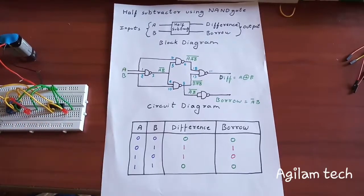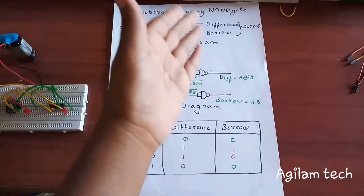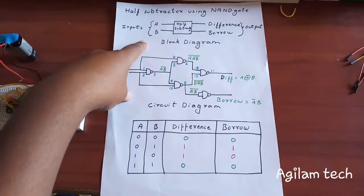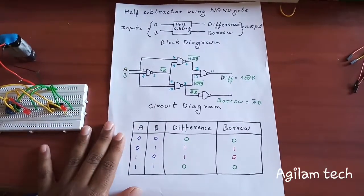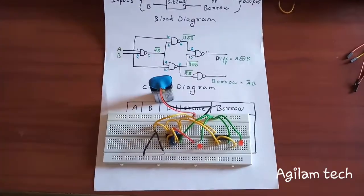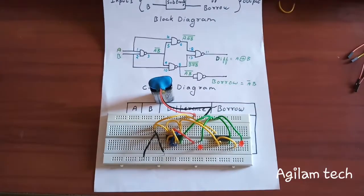Hey everyone, in this video we are going to see a half subtractor using NAND gate. This is the block diagram, and this is the circuit diagram and truth table, and this is the circuit which I have made.